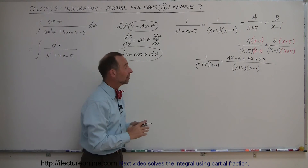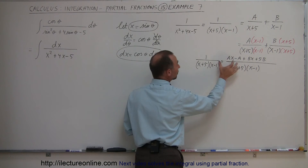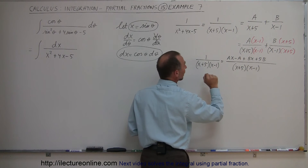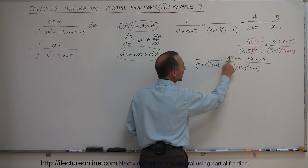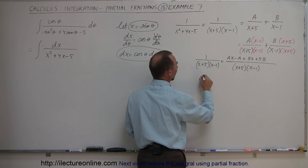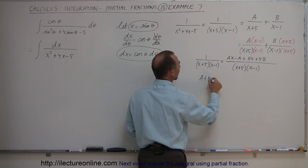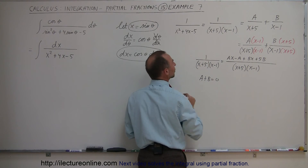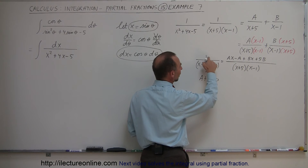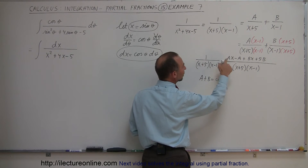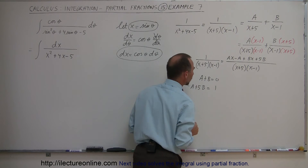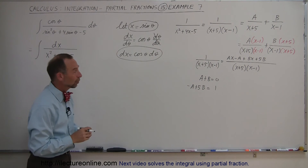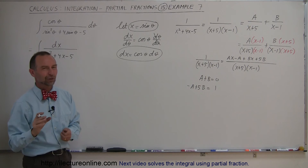Since the denominators are the same, the numerators must be equal. We have no x term on the left, so A plus B must equal 0. The constant on the left is 1, so minus A plus 5B must equal 1. Those are our two equations in two unknowns, which we can solve for A and B.